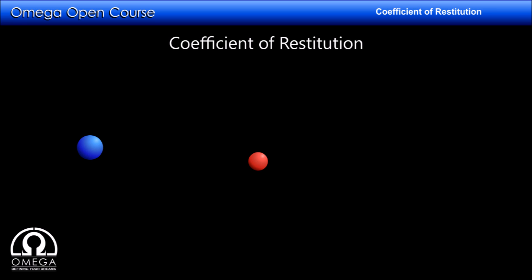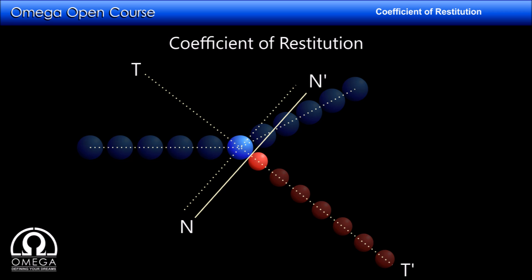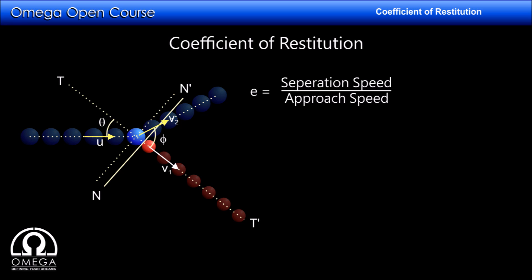Finally, consider an oblique collision in two dimensions where a ball moving with speed u collides with another ball at rest, and after the collision they move in different directions. Let tt' be the line along the final speed of the red ball, which is normal to the contact surface since forces act only along the normal. The blue ball moves with speed u at an angle theta with tt' before the collision; after the collision the red ball moves with speed v1 and the blue ball with speed v2 at angle phi with tt'. For the coefficient of restitution, only the components of velocity along tt' are needed.